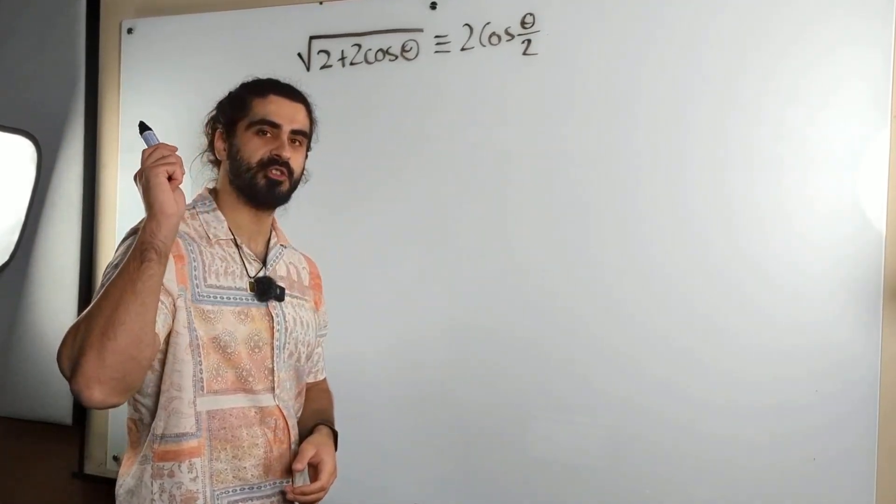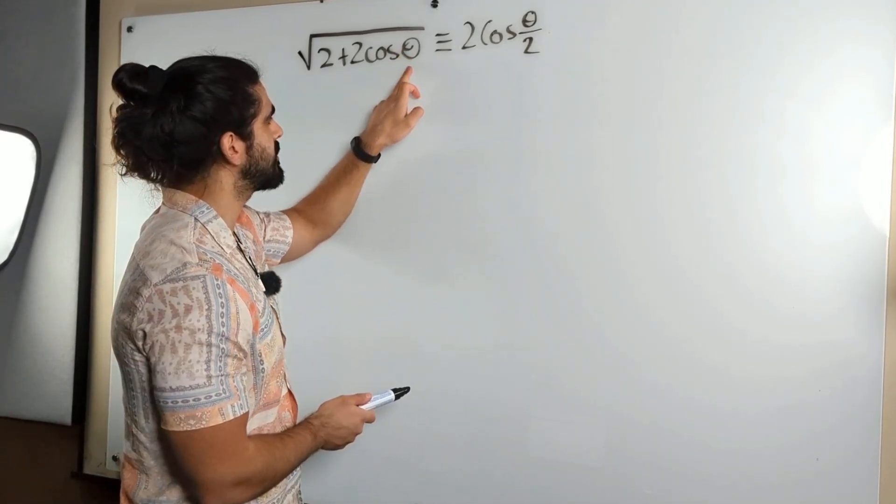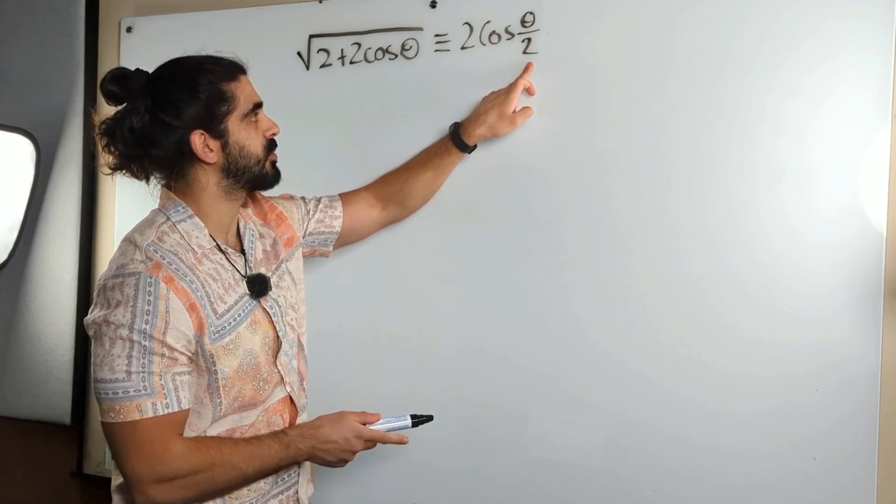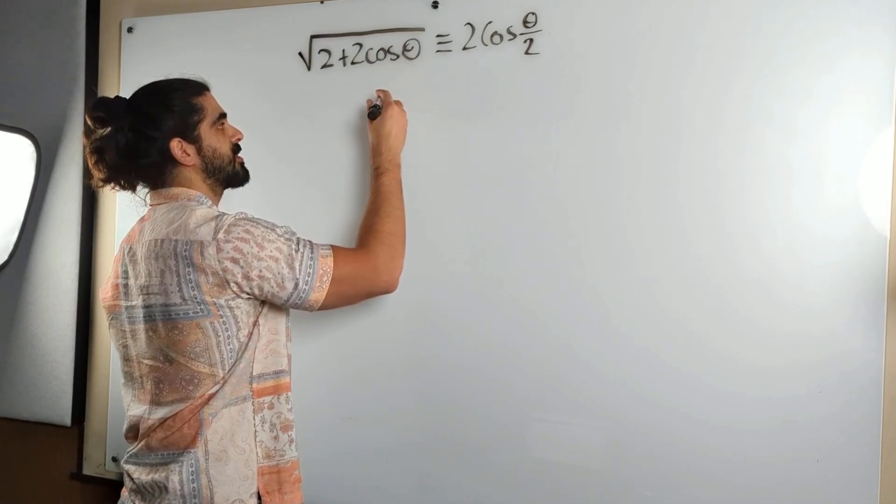Now the first thing you should see is that the angles are different. This is double this one. So I'm thinking about the double angle identities. We're looking at the double angle identities for cosine.